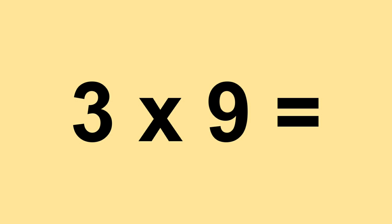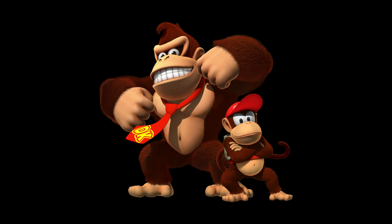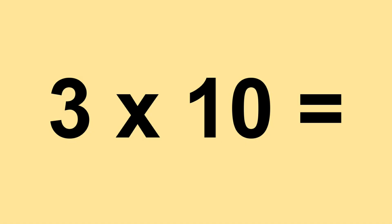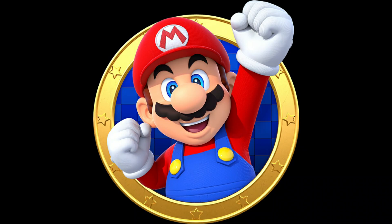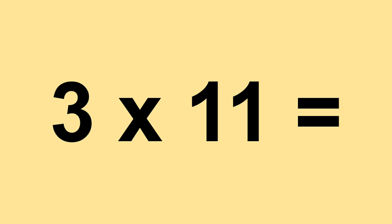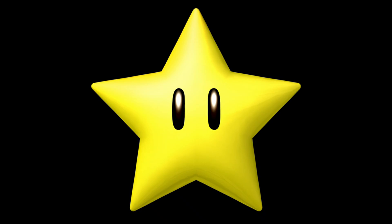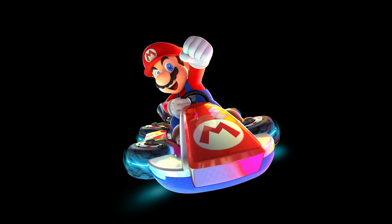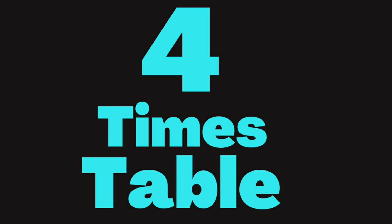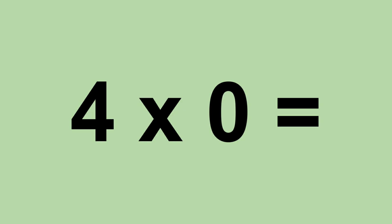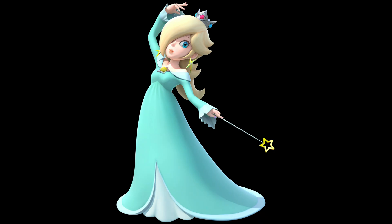Three times nine equals twenty-seven. Three times ten equals thirty. Three times eleven equals thirty-three. Three times twelve equals thirty-six. Four times zero equals zero. Four times one equals four.